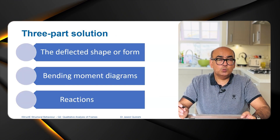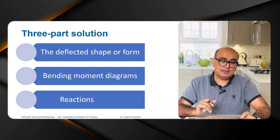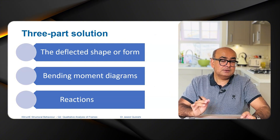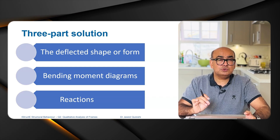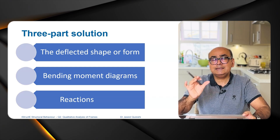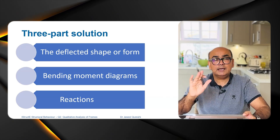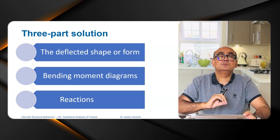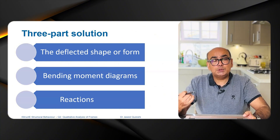I'll be solving this question in three parts: what is the deflected shape of frames, what is the bending moment diagram, and what is the direction of reaction. The key to all this is that if you know the deflected shape, then you can pretty much plot anything — shear force diagram, bending moment diagram, axial force diagram. This is termed qualitative analysis, which means determining structural behavior without performing any calculations.